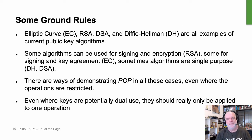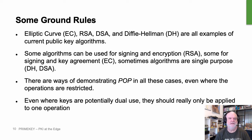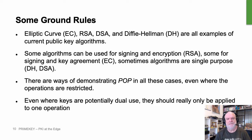Why do we talk about different versions of proof of possession? Elliptic curve (EC), RSA, DSA, and Diffie-Hellman are all examples of current public key algorithms in use. Some algorithms like RSA can be used for both signing and encryption. EC can be used for signing or key agreement. Some algorithms are specifically single-purpose: Diffie-Hellman is for key agreement only, and DSA is for signing only. You can demonstrate proof of possession in all these cases, even where restrictions apply to the operations you can do.